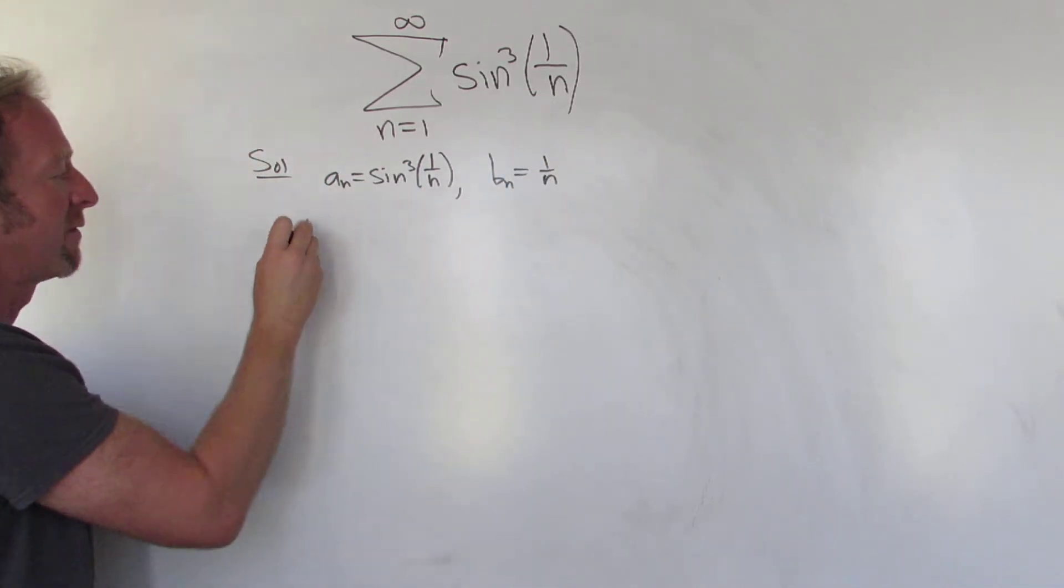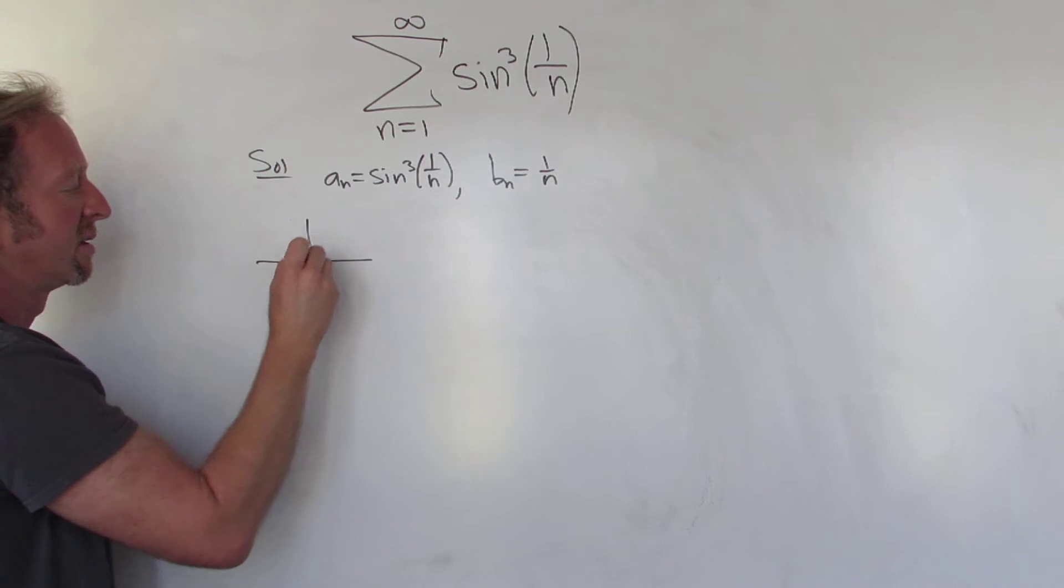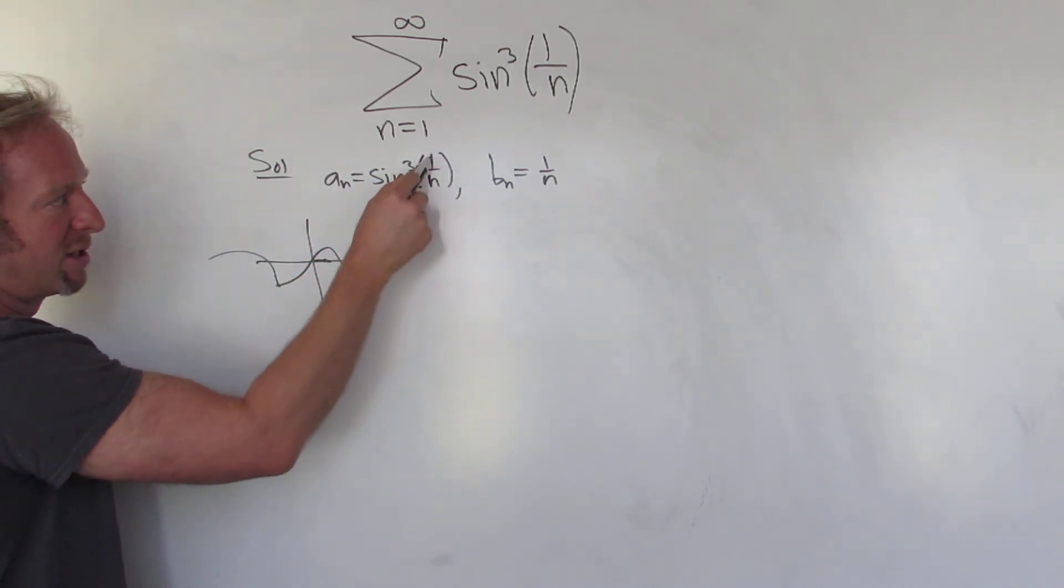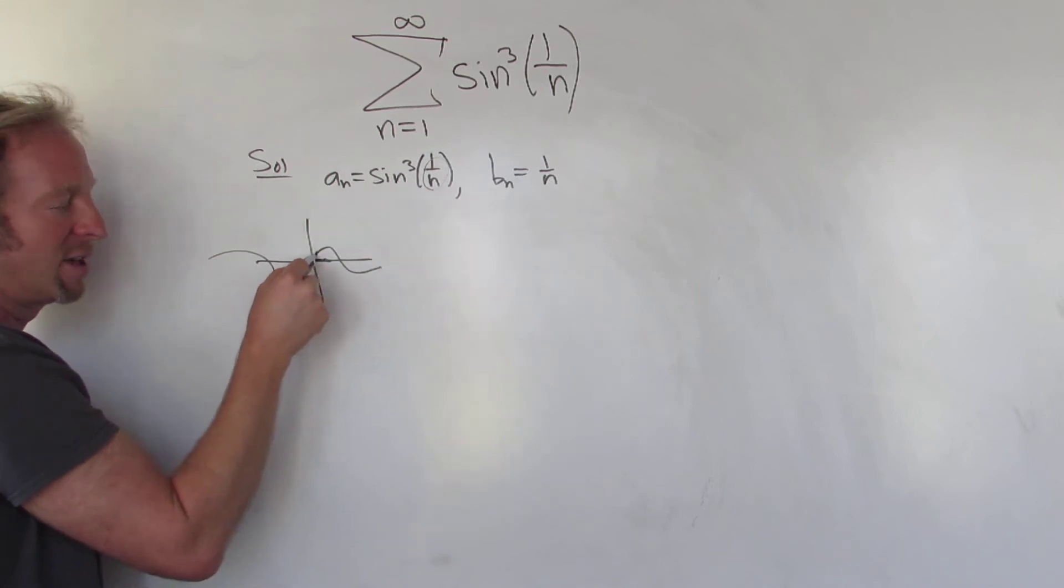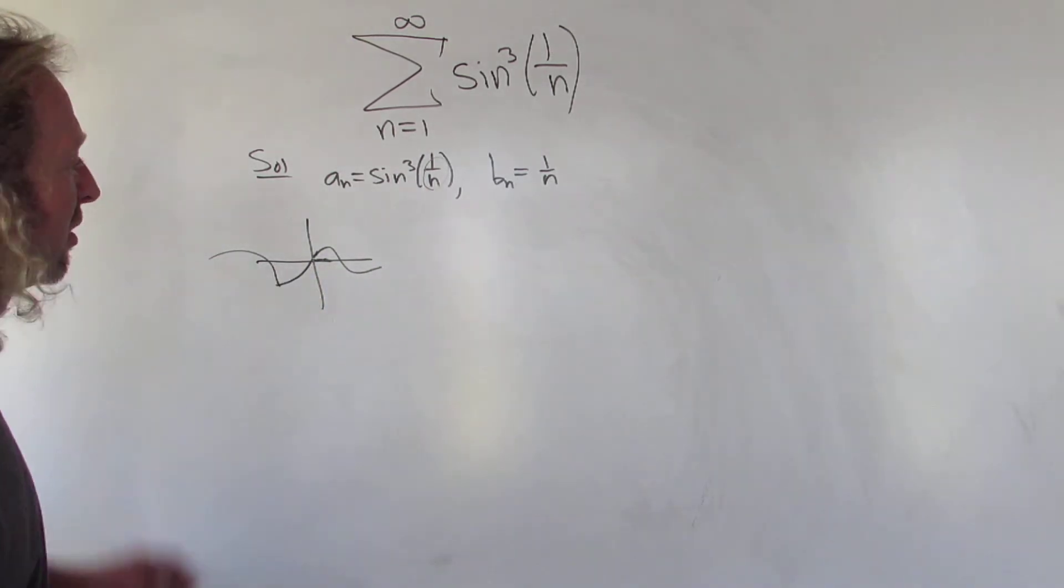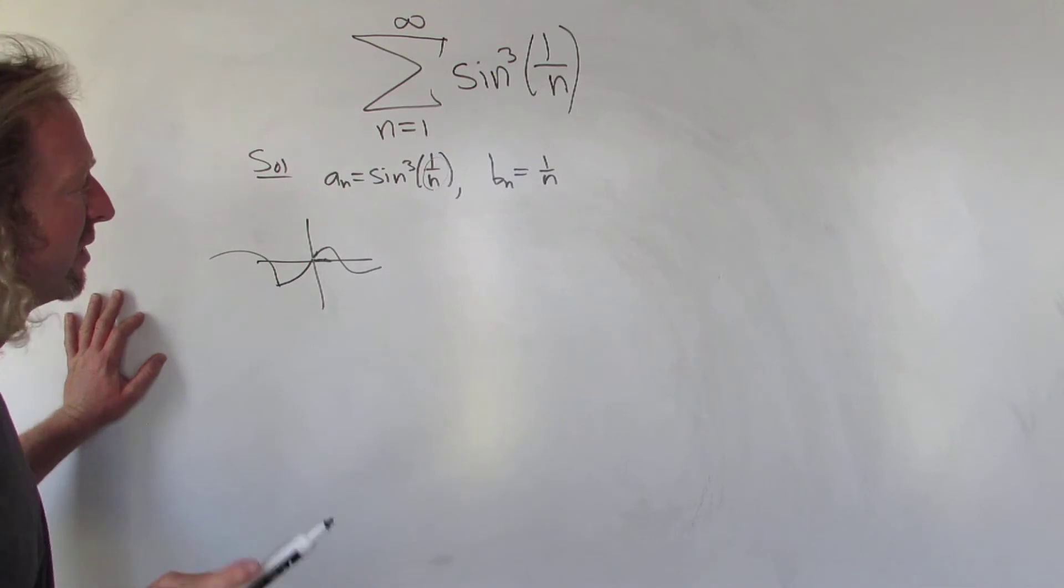Okay, this is positive. If you think about the graph of sine, it looks like this. So we're over here, right, because these are positive numbers and they're super small. So we're up here. So everything is positive. Everything is okay. You can only use limit comparison when everything is positive.